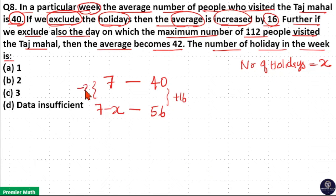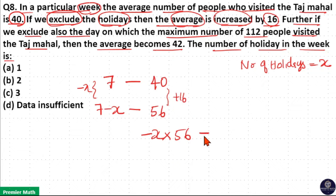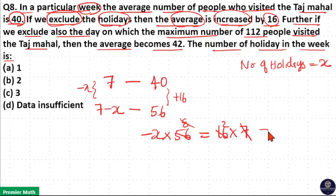The left-hand side difference is minus X and the right-hand side difference is 16. Now, multiply the left-hand side difference minus X with the right-hand side bottom number, that is 56, which is equal to the right-hand side difference 16 multiplied with the left-hand side top number 7. Now, 7 goes 8 times in 56, and 8 goes 2 times in 16. That means X is equal to 2. Ignoring the negative symbol, X equals 2, so the number of holidays is equal to 2.